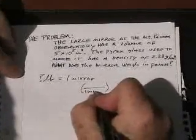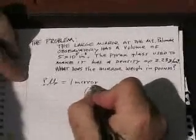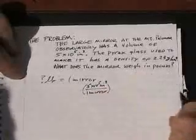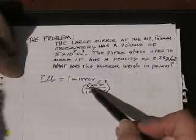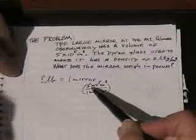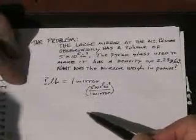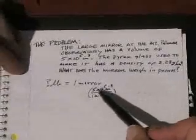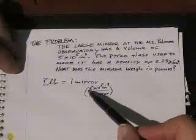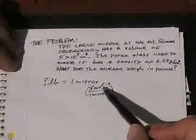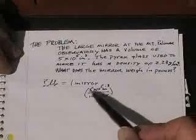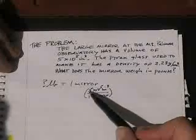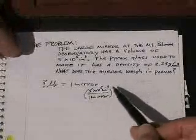One mirror, a volume of 5 times 10 to the 5th cubic inches. And I might note right now that this number has one significant figure. So in my calculation of this, at the end, I'm going to have an answer with one significant figure. Scientific notation makes it really easy to tell how many significant figures there are in a measured number. Of course, the one mirror is exact. But 5 times 10 to the 5th cubic inches is a measured quantity.